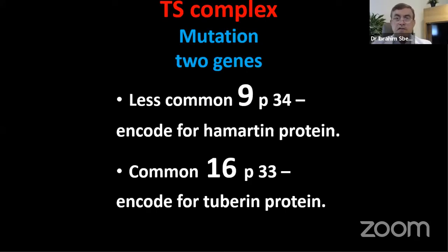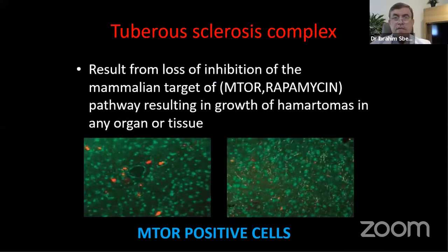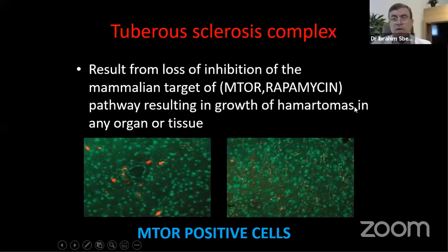One mutation is more common at chromosome 16, related to hamartine, and the other is at chromosome 9, related to tuberin. This genetic mutation leads to inhibition of the mammalian target of rapamycin pathway, which results in the growth of hamartomas in any organ or tissue.